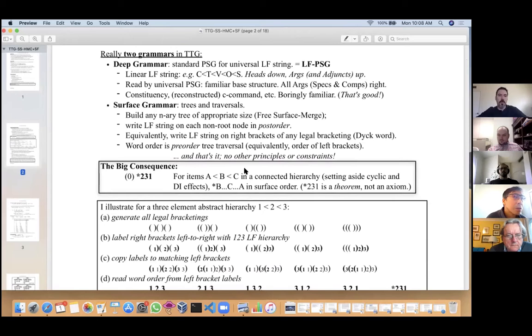In this theory there are really two grammatical devices, similar to the aspects-era model of deep structure and surface structure. Here the deep grammar is a bog-standard phrase structure grammar that operates on LF, which is formatted as a string. This is what I call the LF PSG. LF is formatted as a string in a sort of unusual way: if you think of the normal representation of a clause, the LF string is all the heads taken top-down, followed by the arguments and adjuncts going bottom-up.